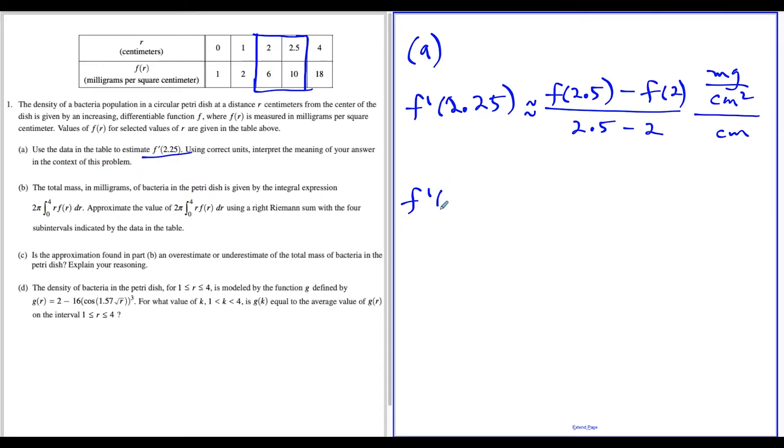That tells us f prime of 2.25 is roughly equal to... we're taking values from the table: 10 minus 6 over 0.5. I could leave the units like this or call this milligrams per cubic centimeter. From here to simplify, 4 divided by 0.5 is 8. So f prime of 2.25 is roughly equal to 8 milligrams per cubic centimeter.